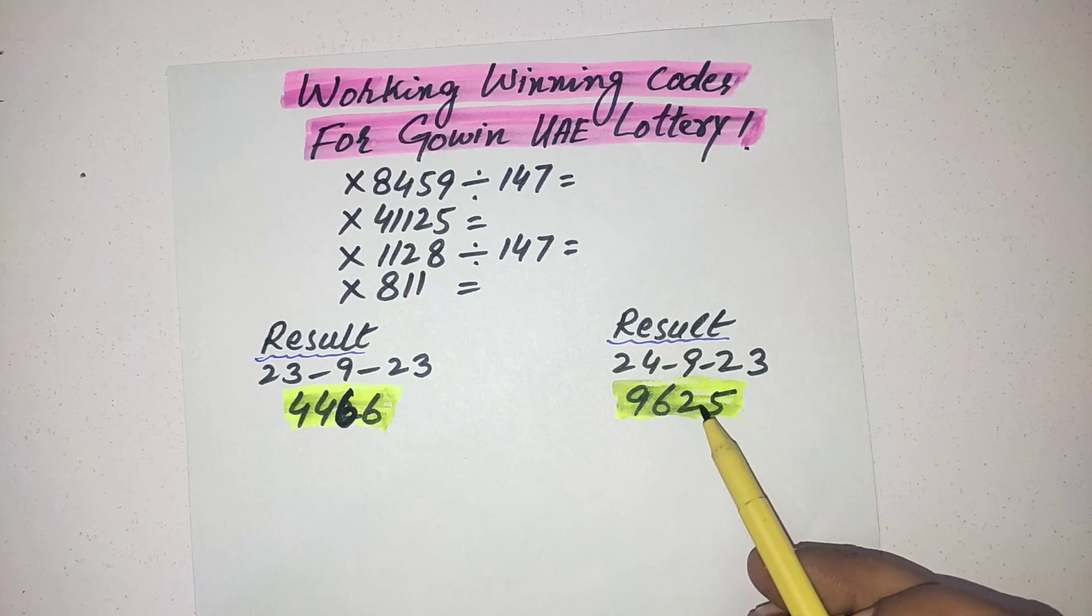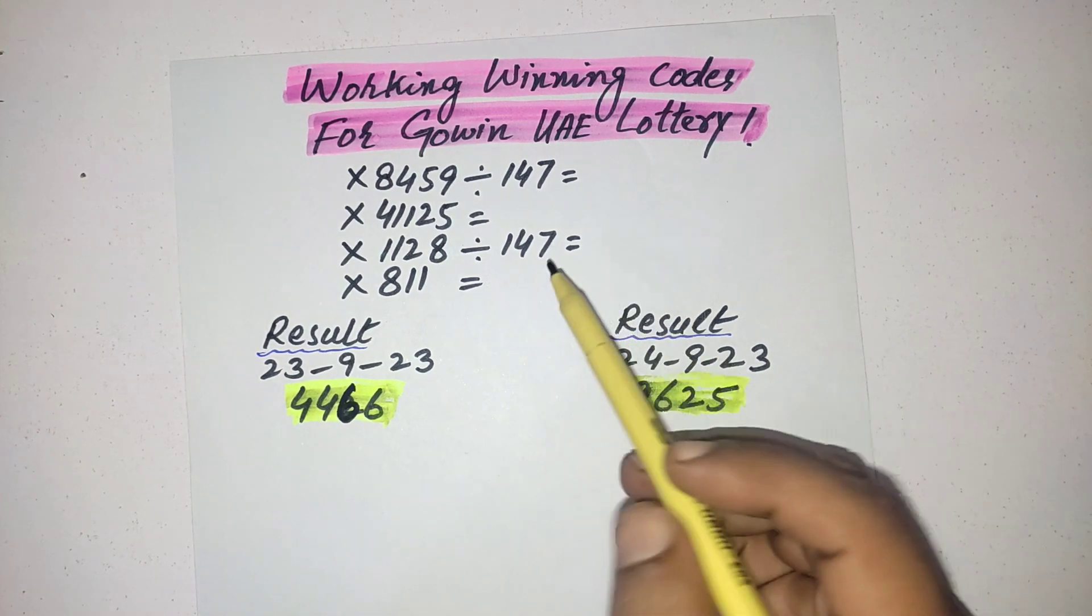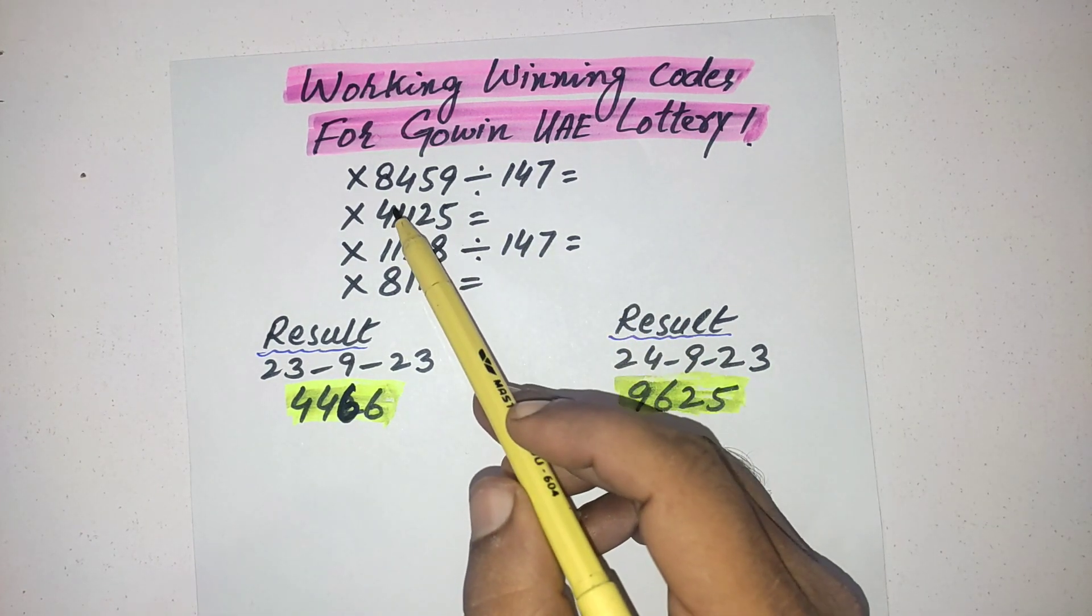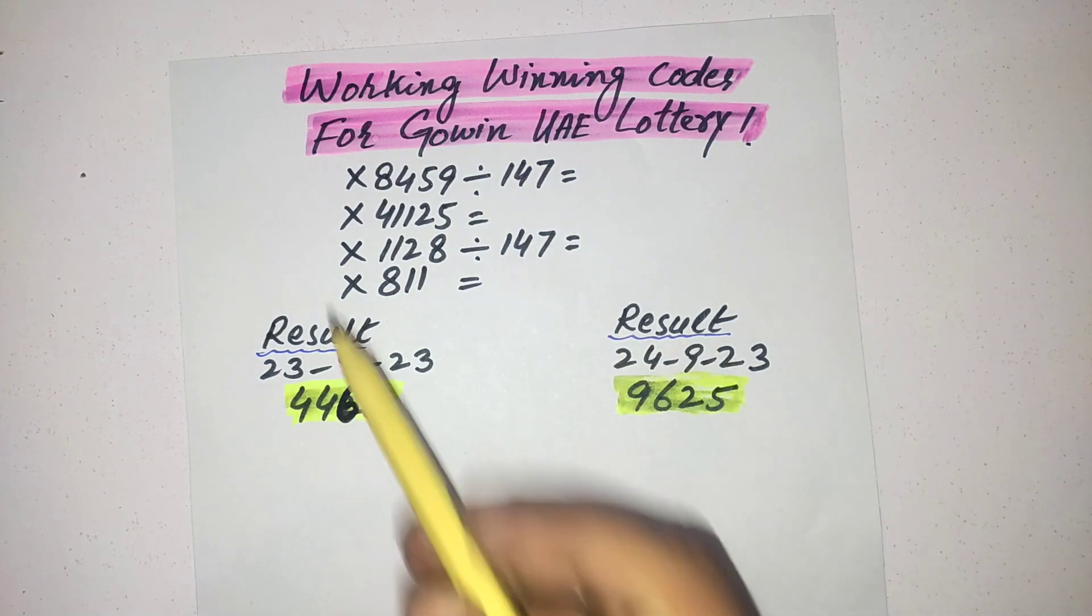This is the result on 23rd November, 4466. Here is double six. And the latest result of GoWin is 9625. So let's see how these codes are working.